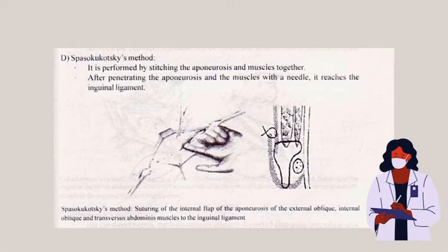Next is Spasokokotsky's method. It is performed by stitching the upper aponeurosis and the muscles together. After penetrating the upper aponeurosis and the muscles with the needle, it reaches the inguinal ligament.